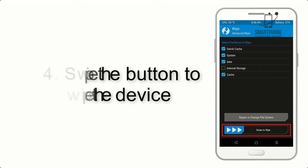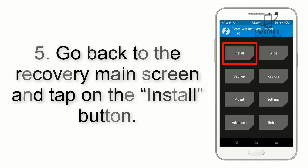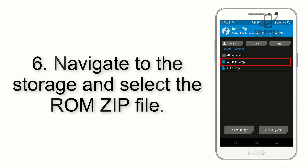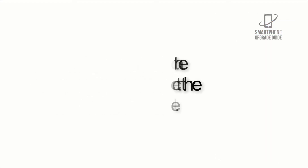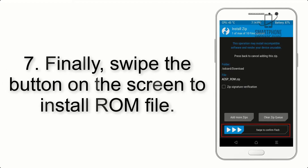Step 4: Swipe the button to wipe the device. Step 5: Go back to the recovery main screen and tap on the Install button. Step 6: Navigate to the storage and select the ROM zip file.